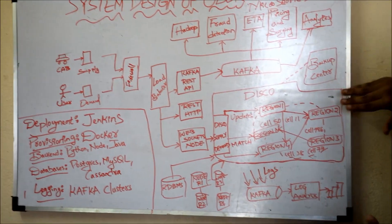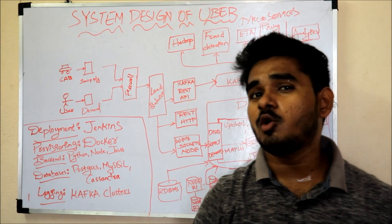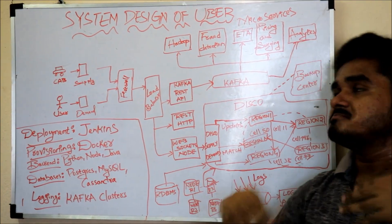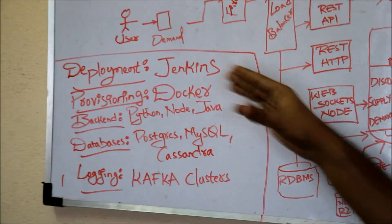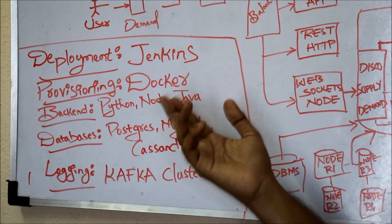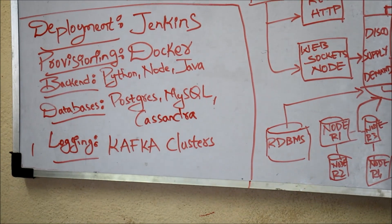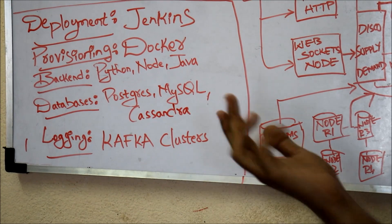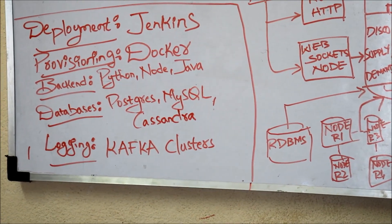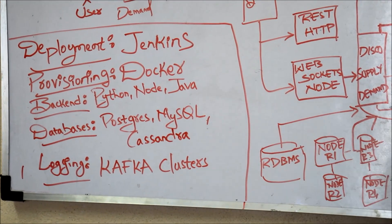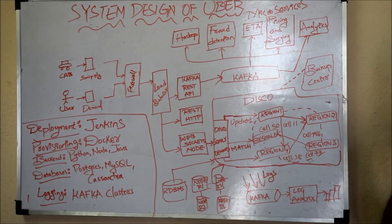This is the overall high-level architecture of Uber. Without understanding this, if you directly try to implement a product using only coding, it is meaningless — system design is very important for any product. When it comes to the tech stack, for deployment Uber uses Jenkins, a continuous integration tool. For provisioning, Docker is used to containerize the entire app wherever it needs to be deployed. For the backend, it uses Python, which is platform independent, and Node.js because microservices focus on modularization and every module is independent.